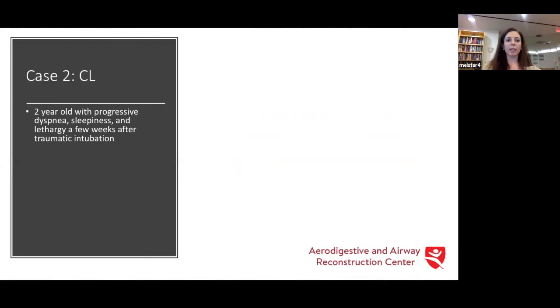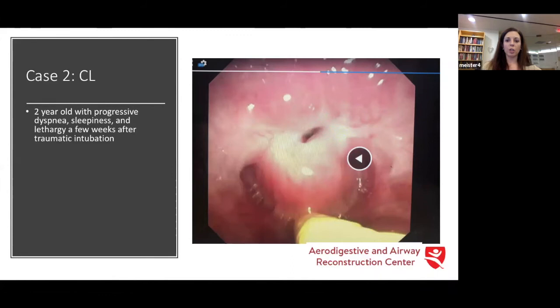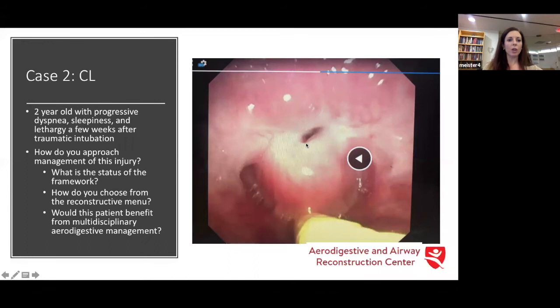Case two: she is a two-year-old with progressive dyspnea, sleepiness, and lethargy a few weeks after a traumatic intubation. She is transferred overnight from another hospital for these concerns. This is a still of the video sent with her from another institution. To orient you: this is her feeding tube going into the esophagus, this is her tongue base, and this is her supraglottis. She has what used to be two arytenoids, basically melded into what is now her tongue base. We could at one point dig out the cartilage of her epiglottis. Thinking about the three concepts of airway reconstruction: what is the status of the framework, how do you choose from the reconstructive menu, and does this patient benefit from multidisciplinary management?